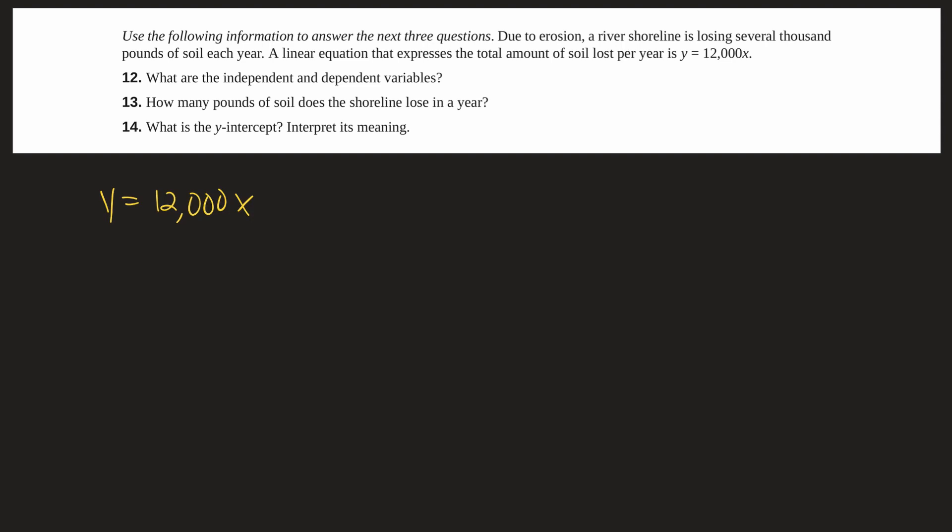Now before we go into the three questions here you might be asking yourself well this looks different. Something looks like it's completely missing and we know our slope intercept form is y equals mx plus b. Now if you look over here I see the y equals mx part but where is the b?